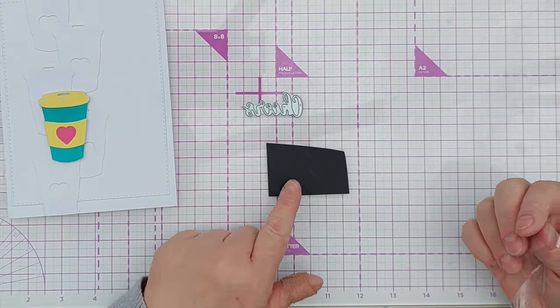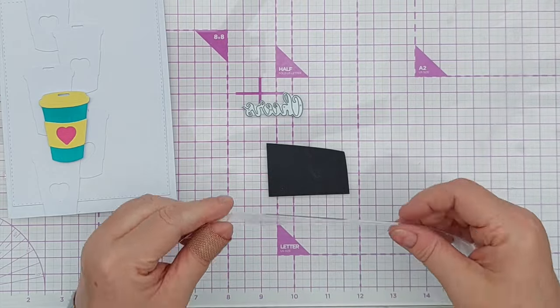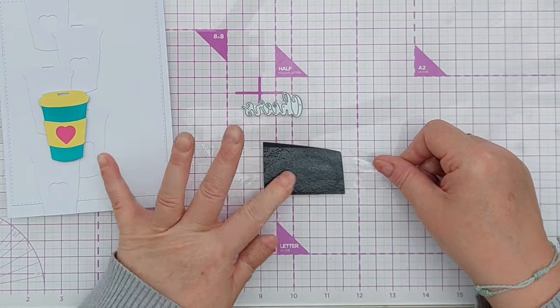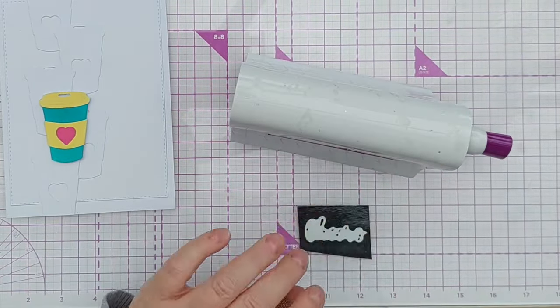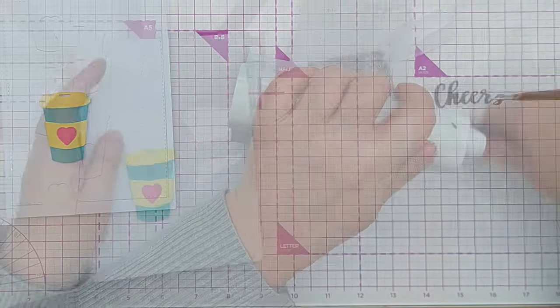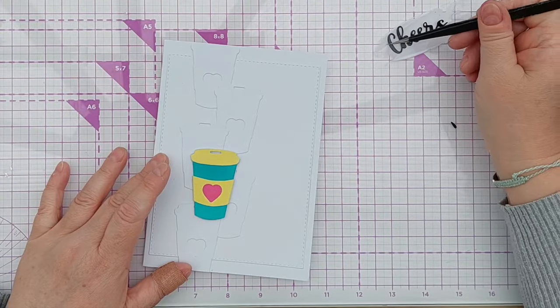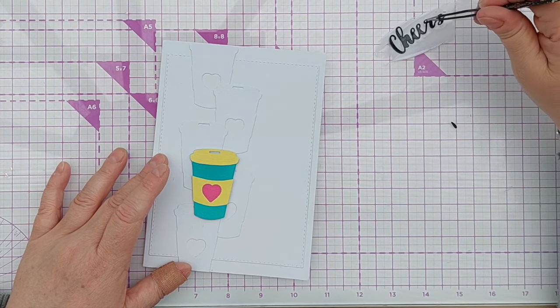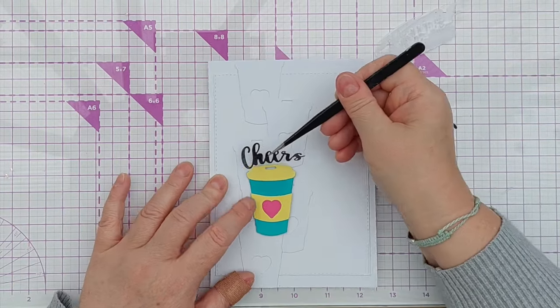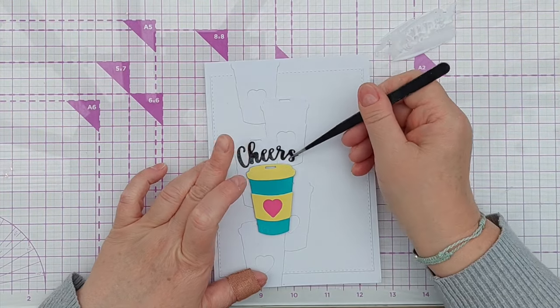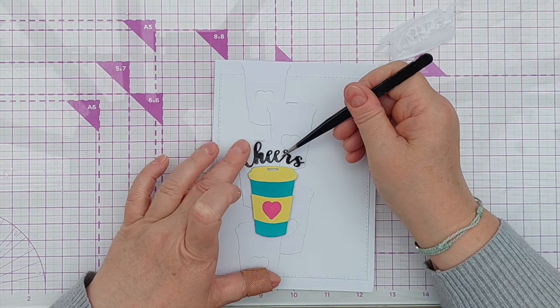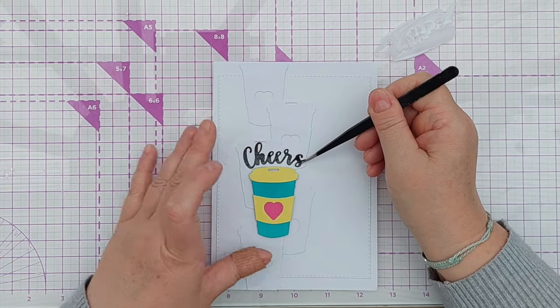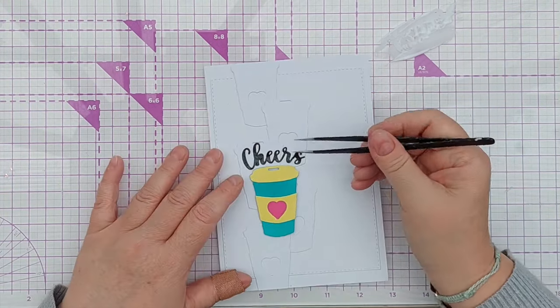For my sentiment I'm going to die cut the word cheers out of black cardstock, but before I do I'm going to cover it in clear packing tape to make it glossy. I'm going to dip this in PVA glue and add it to my card around the top of the coffee takeaway mug thing and curve it so it follows the curve of the cup.